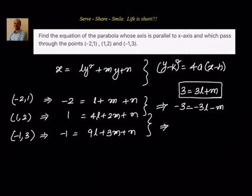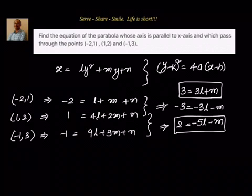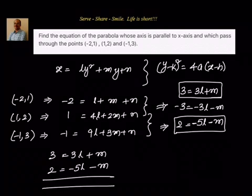Similarly, subtracting the second equation from the third: 1 minus 1 minus 1 gives minus 2 on the left. On the right, 4l minus 9l is minus 5l, and 2m minus 3m is minus m. So our second equation is 2 equal to minus 5l minus m.